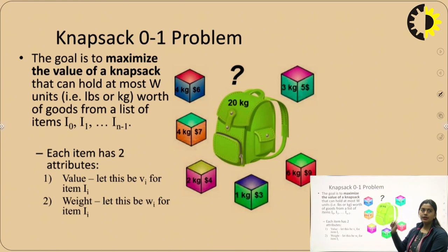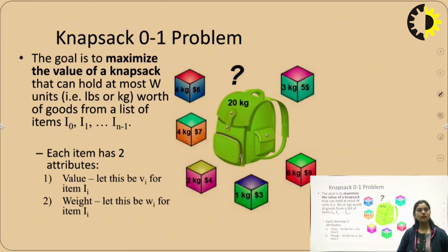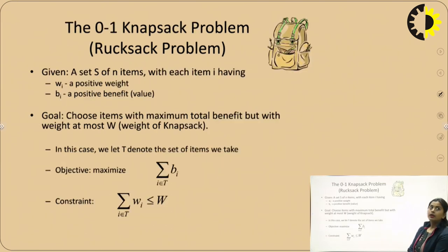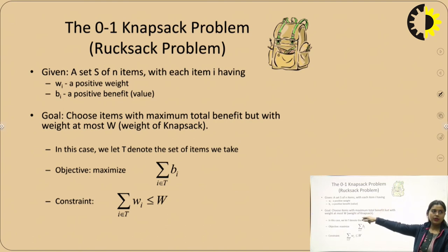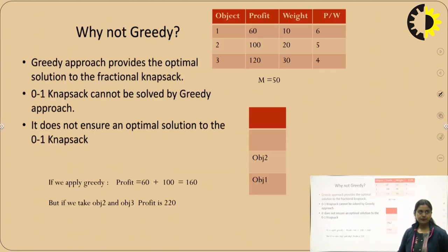This is a visualization — there is a knapsack and different objects. Suppose this bag has a capacity of 20 kg and there are different modules. The goal is to maximize the value of the knapsack that can hold at most W units worth of goods from items 0 to n. In the Zero-One Knapsack Problem, there is a set S of n elements, each element having a particular weight and benefit value. The goal is to choose items with maximum total benefit but weight at most W.